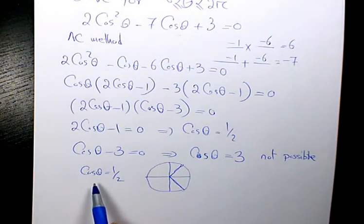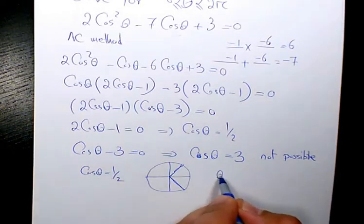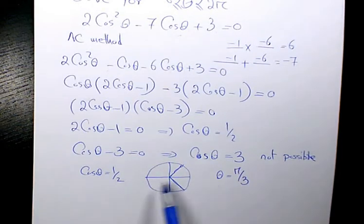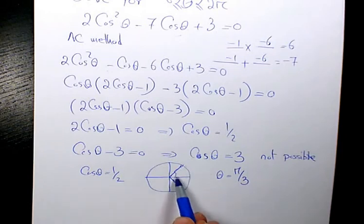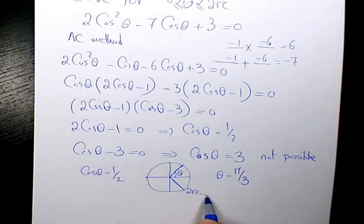So based on the special triangles or special angles, and also if you can use the calculator, you can have theta equals to pi over 3. Cosine pi over 3 will be 1 over 2. So that's the answer for quadrant 1. We need to have another answer in quadrant 4, which is going to be 2 pi minus theta.